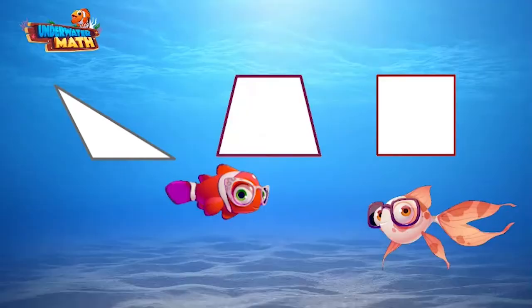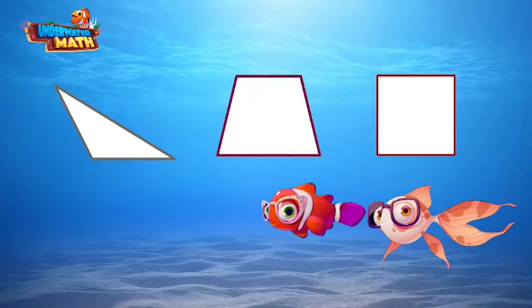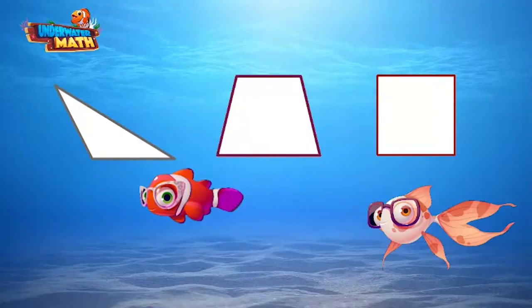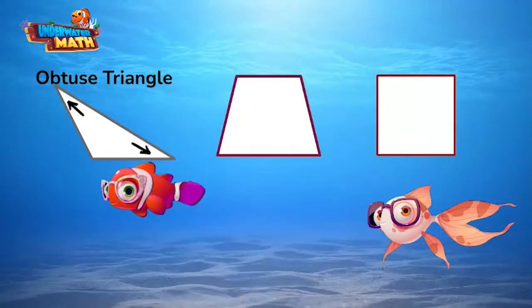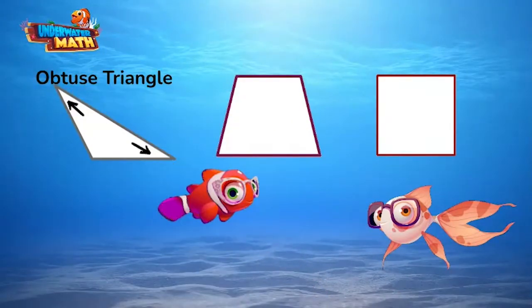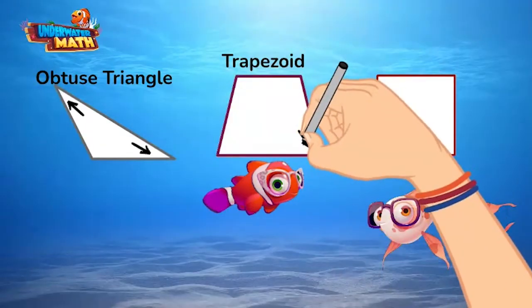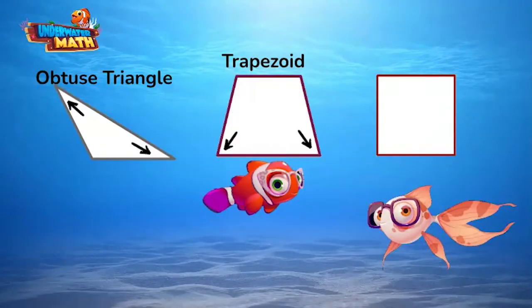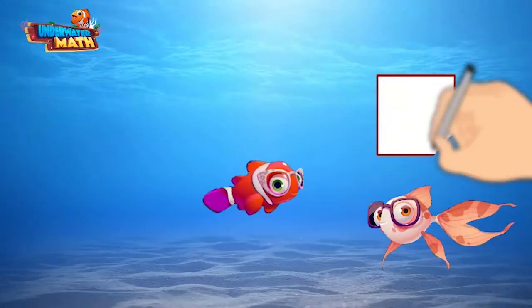Sammy: Try this one — I'm thinking of a shape that has at least two acute angles. Alicia: The square only has right angles, so we can eliminate that. The obtuse triangle has one obtuse angle and two acute angles, so that works. The trapezoid has two acute angles as well. It must be the obtuse triangle and the trapezoid! Sammy: Right again!